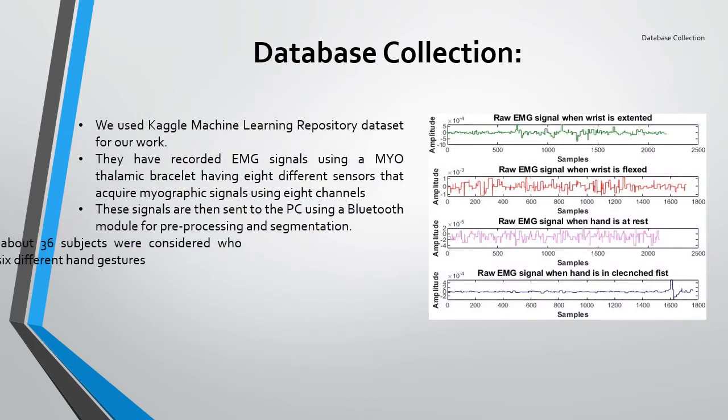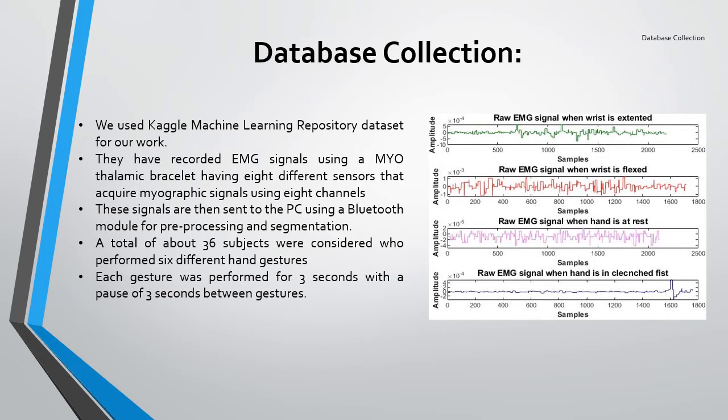Database collection: We used the Kaggle machine learning repository dataset for our work. EMG signals were recorded using a myo-armband bracelet having 8 different sensors that acquire myographic signals using 8 channels. These signals are then sent to the PC using a Bluetooth module. A total of about 36 subjects were considered who performed 6 different hand gestures. But in our study, we worked on 4 major classes: hand at rest, hand clenched in a fist, wrist extension, and wrist flexion. Each gesture was performed for 3 seconds with a pause of 3 seconds between gestures.